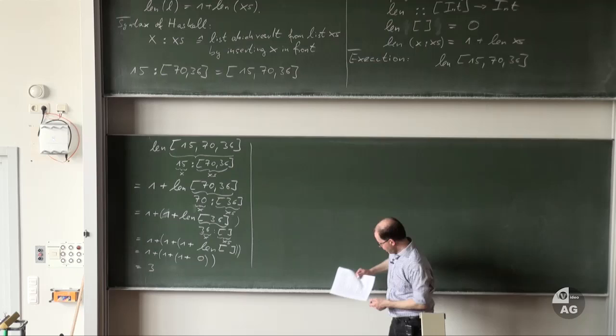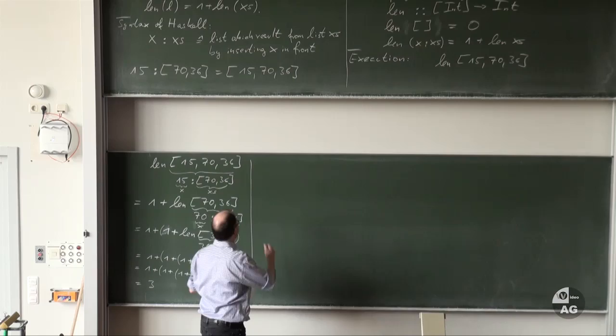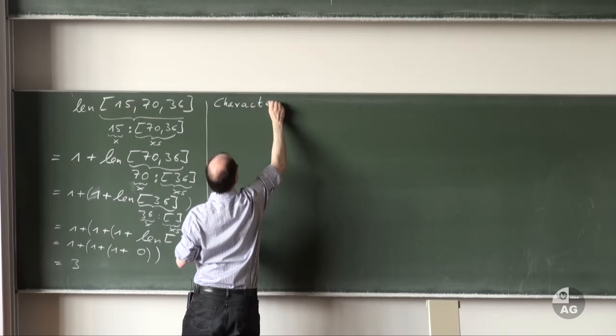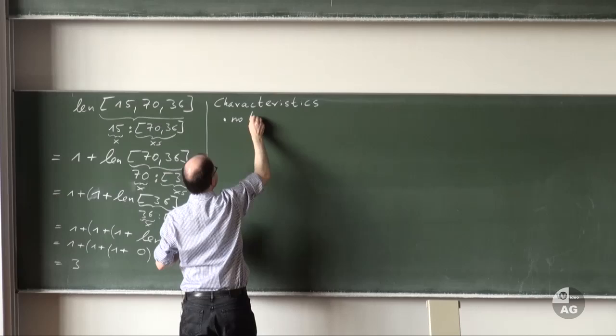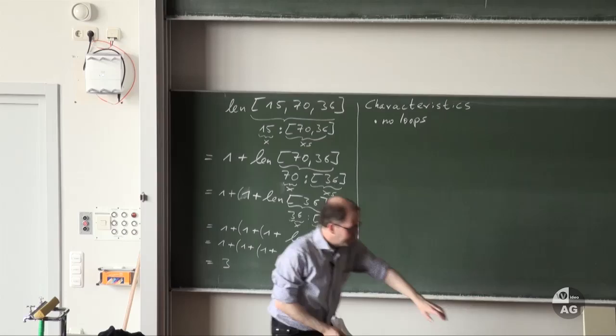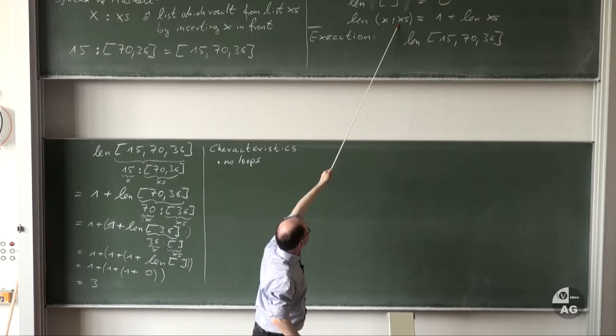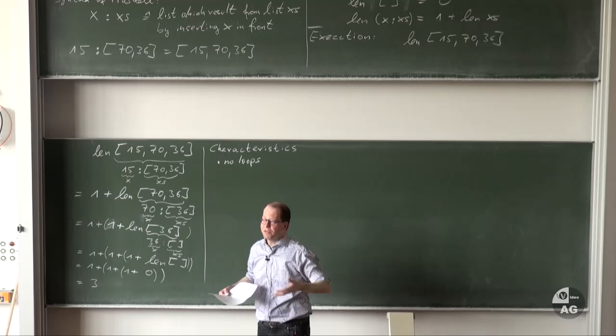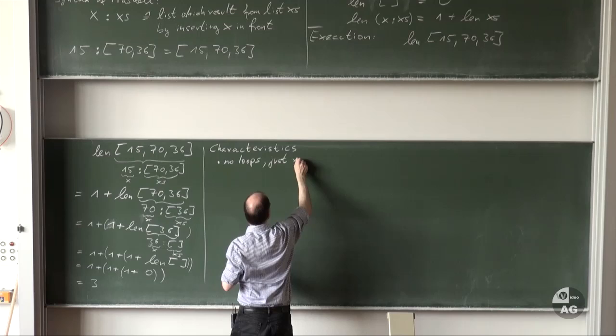What are the characteristics compared to imperative programming? Comparing the Haskell program with the Java program: first, there are no loops. The concept of while loops does not exist. If we want to do something repeatedly we have to use recursion, which is indeed what we did — length is defined recursively. So no loops, just recursion.